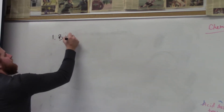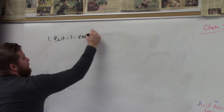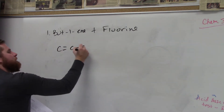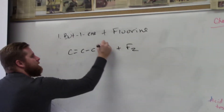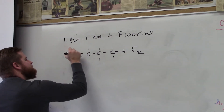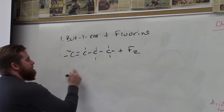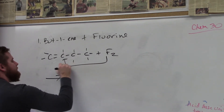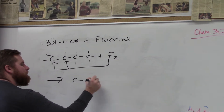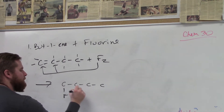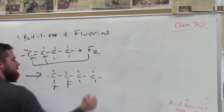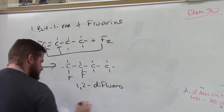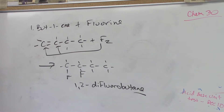Let's look at a word problem. Bute-1-ene plus F2 gas — all these are hydrogens. The fluorine goes to each part of the double bond, breaking up the double bond to saturate the hydrocarbon. You'll have a fluorine here and a fluorine here, and you'll end up with 1,2-difluorobutane — butane, with -ane because it's now saturated.